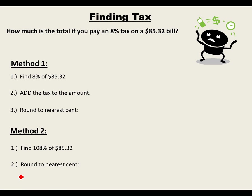Now let's go on to finding tax. Tax is kind of the opposite of a discount because it's something added on to your bill — in addition to your payment. Let's find 8% tax on an $85.32 bill.